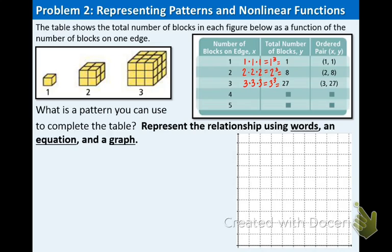This pattern continues for the next two numbers. For 4: 4 times 4 times 4, or 4 to the 3rd, equals 64 — so the coordinate point is (4, 64). For 5: 5 times 5 times 5, or 5 to the 3rd, which is 5 cubed, equals 125 — so the coordinate point is (5, 125). This table will be really helpful when we graph.